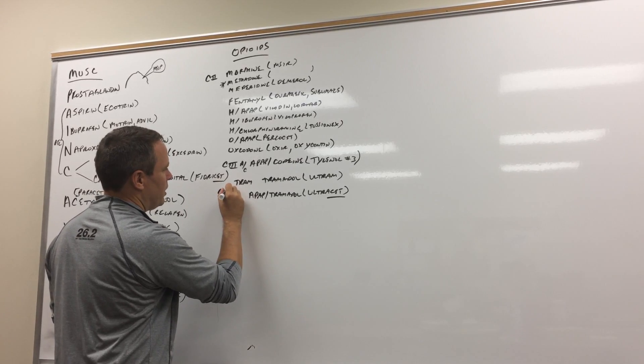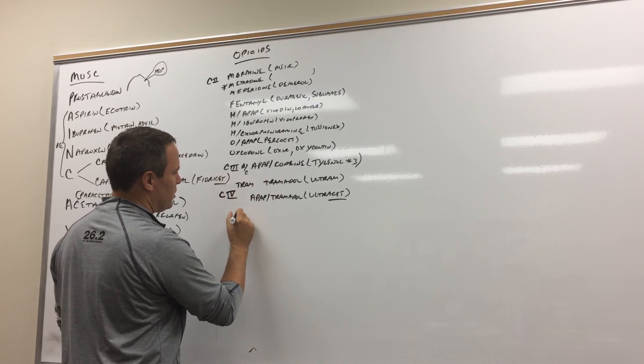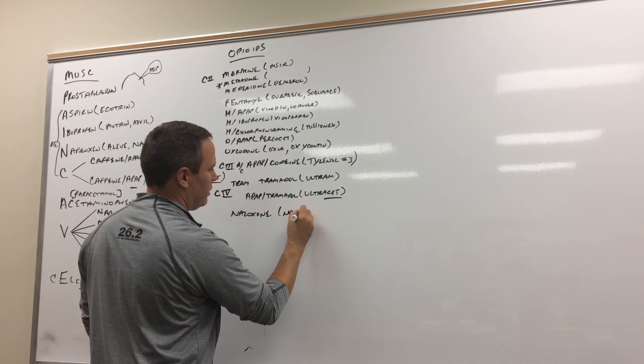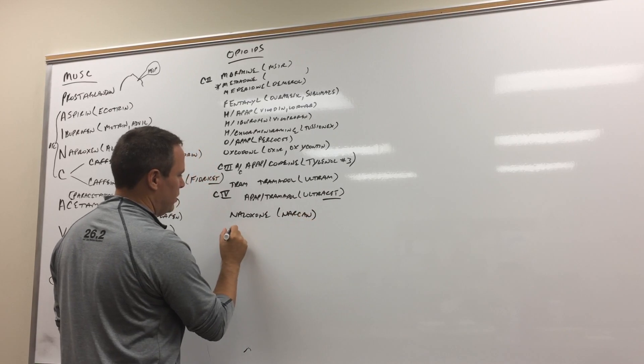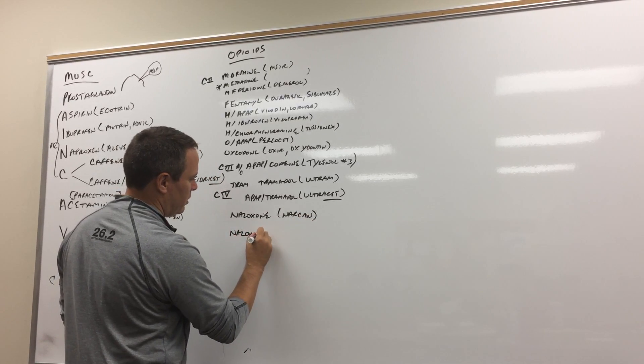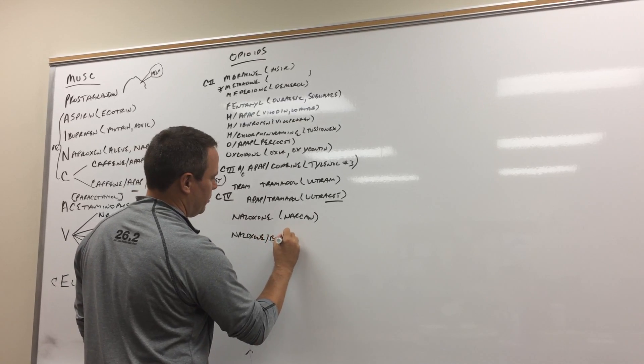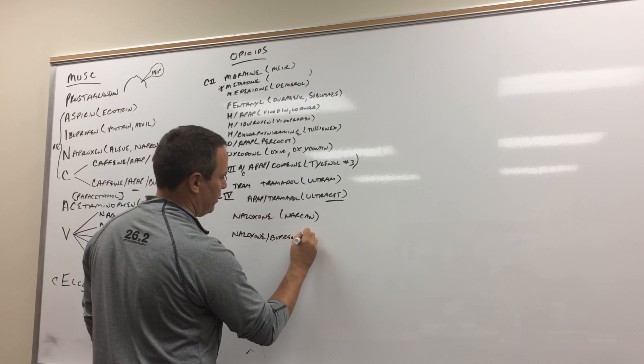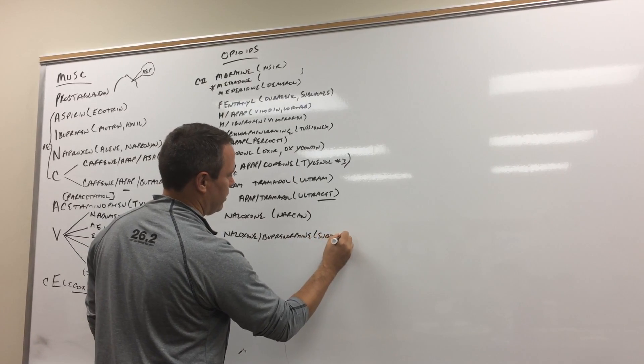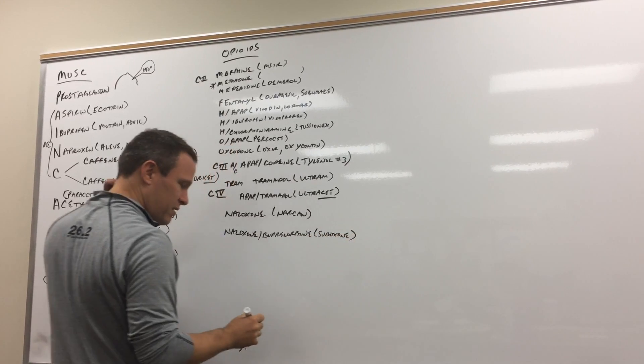And then we've got the antagonist so let me put the C4 there. So then we're going to have a couple of antagonists. I know there's Naloxone which is Narcan and then there's Naloxone with Buprenorphine and that's Suboxone. So a little bit different.